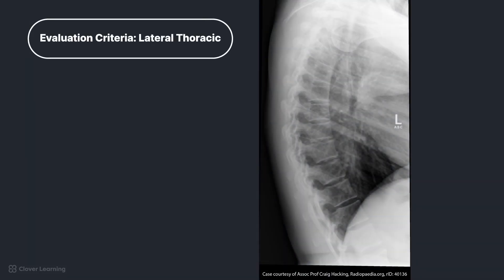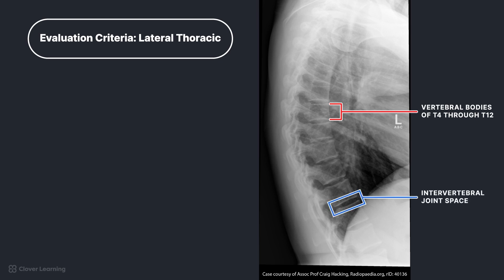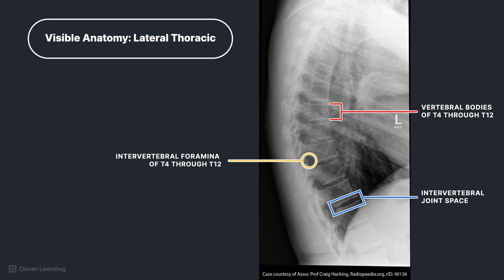Here we have the lateral projection of the thoracic spine. In this image, the vertebral bodies, intervertebral joint spaces, and intervertebral foramina of T4 through T12 should be demonstrated. The intervertebral disc spaces should be open, and a true lateral is indicated by the superimposition of the posterior aspects of the vertebral bodies. Note that T1 through T3 will not be well visualized, so a cervical thoracic swimmer's lateral should be obtained if the upper thoracic vertebrae are of interest.